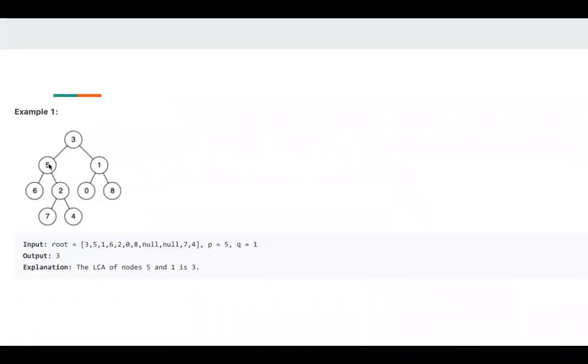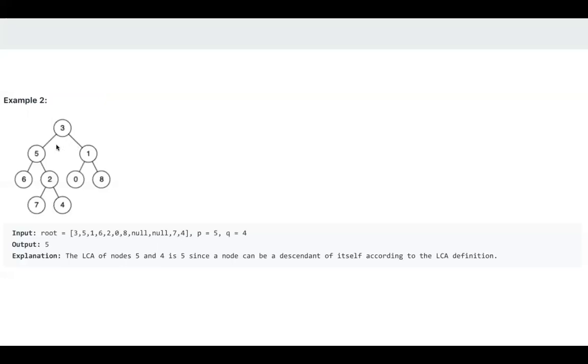In the first example, p is 5, q is 1, so lowest common ancestor is node 3. In this example, p is 5, q is 4, so lowest common ancestor is 5.